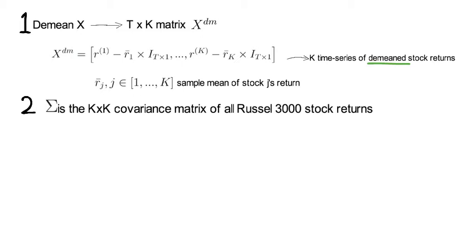Second, the K times K covariance matrix of all Russell 3000 stock returns is what we call sigma, and sigma is full and potentially multicollinear.